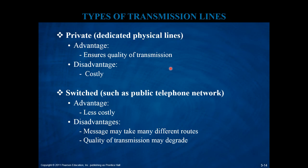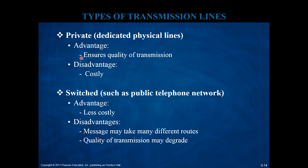There are a couple of ways of organizing transmission over lines. One way is to use a private or dedicated physical line, meaning you have your own line connecting, say, one computer to another in a different office or city. The advantage is that you can ensure quality of transmission — you're not sharing the line with anybody — and you can make sure the line has good physical properties, is properly insulated, and is not subject to interference. The disadvantage is that it's costly.